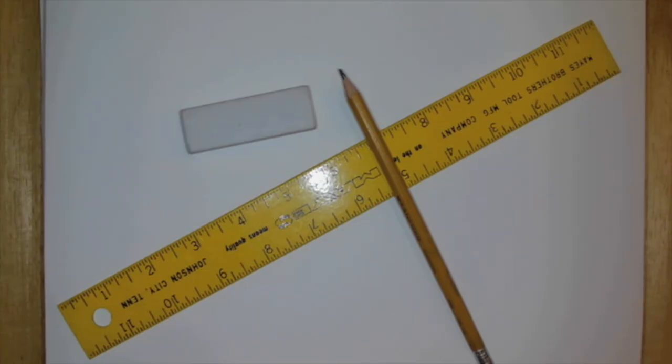In order to do any kind of perspective you're going to need a couple of things: your sketchbook, an eraser, a pencil, and a ruler.